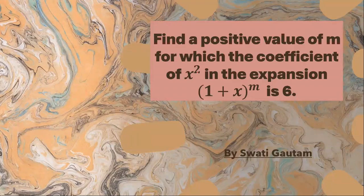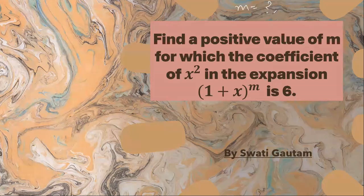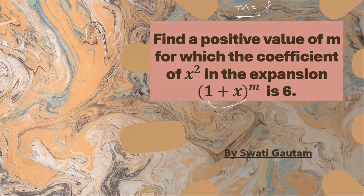In the question we have to find out the positive value of m — for which the coefficient of x raised to the power 2 in the expansion is 6. The expansion given is 1 plus x raised to the power m, and we need to find the term containing x squared whose coefficient equals 6.